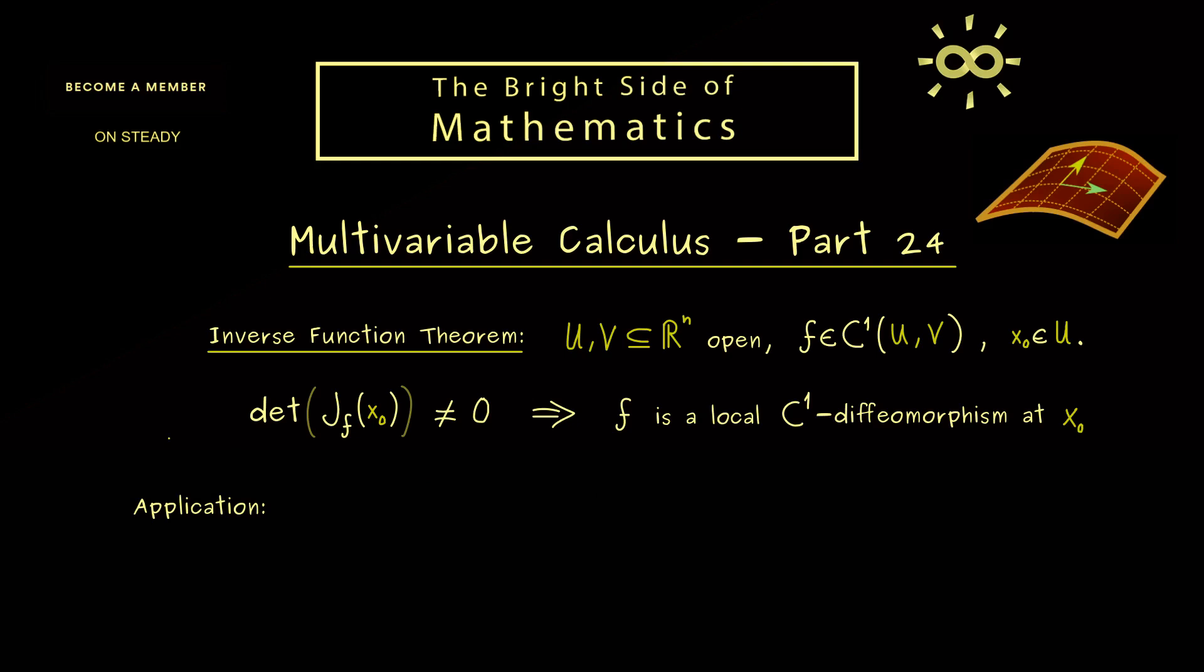Around these points we can invert the function and still have a C1 function. Hence this is already useful in the moment we need some inverse functions. For example, you could have an implicit equation with three variables. Maybe let's start simple.